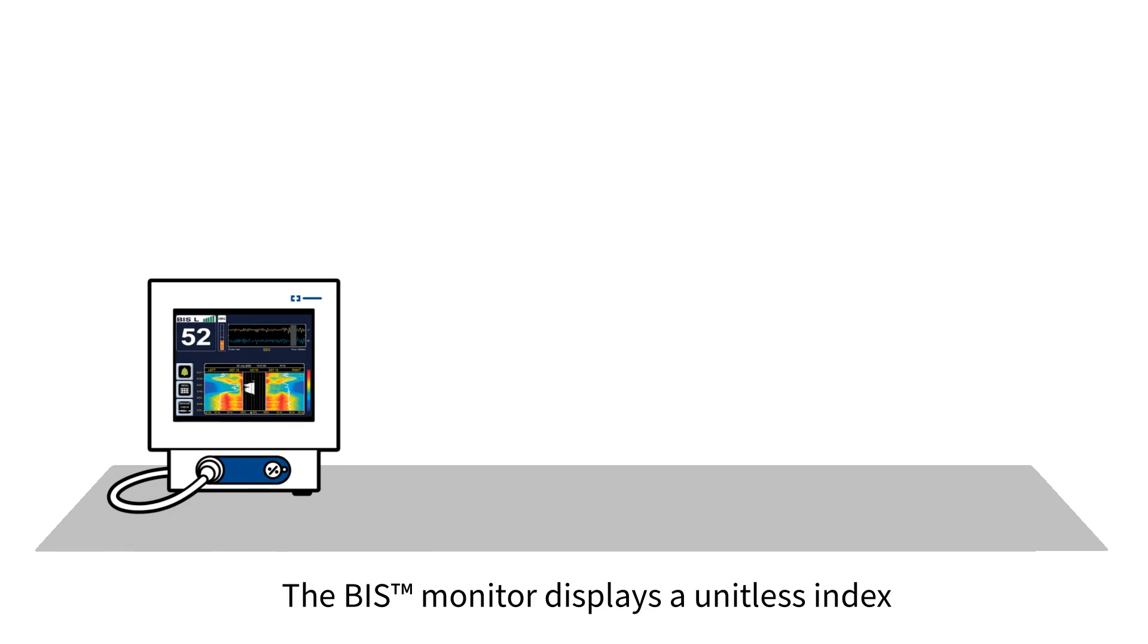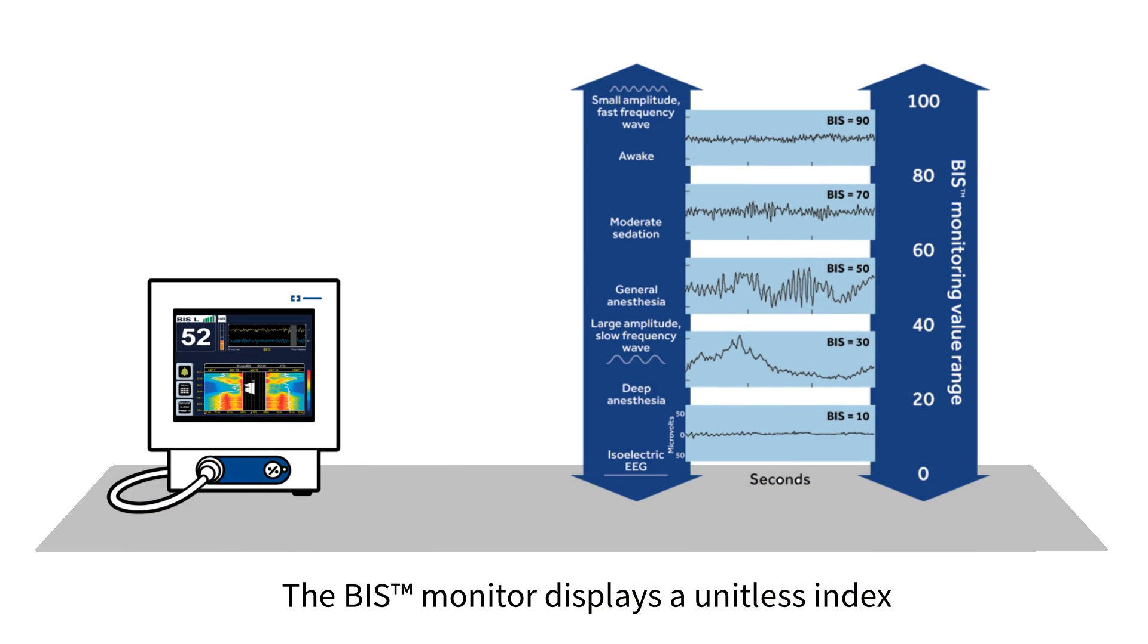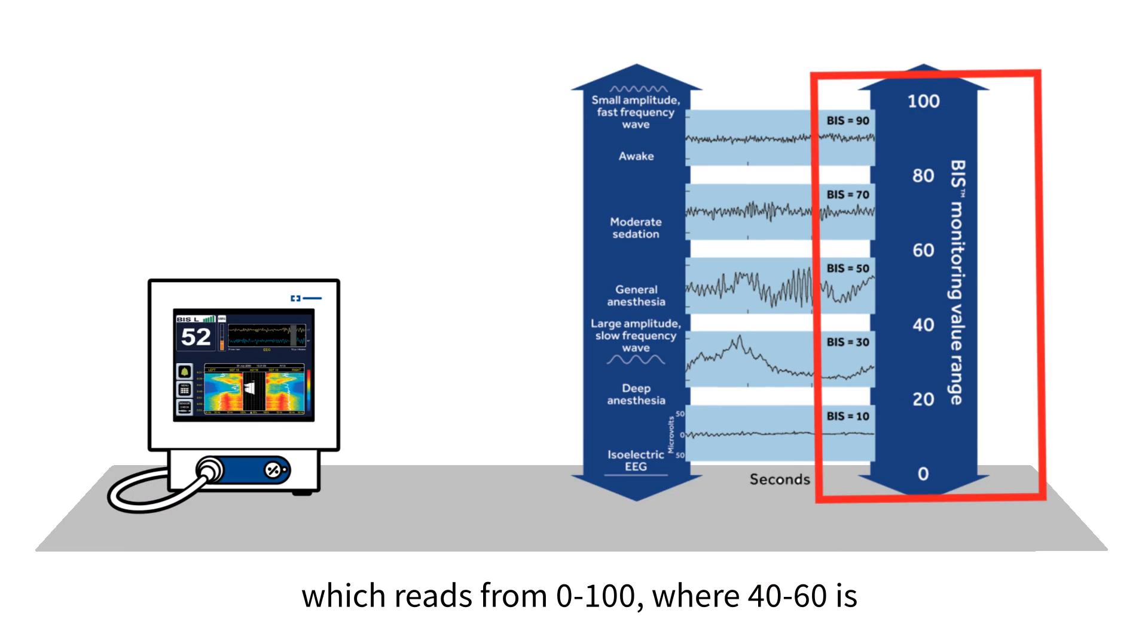The BIS Monitor displays a unitless index which reads from 0 to 100, where 40 to 60 is associated with general anesthesia.